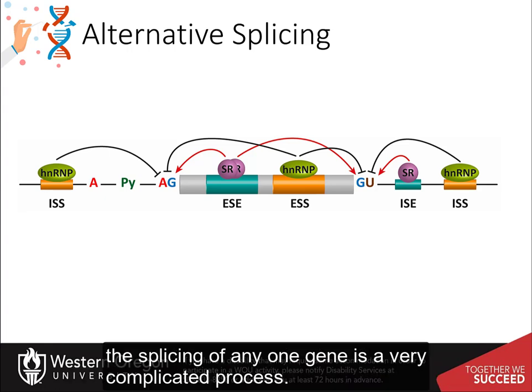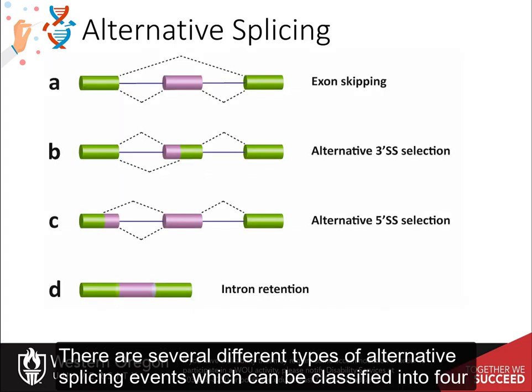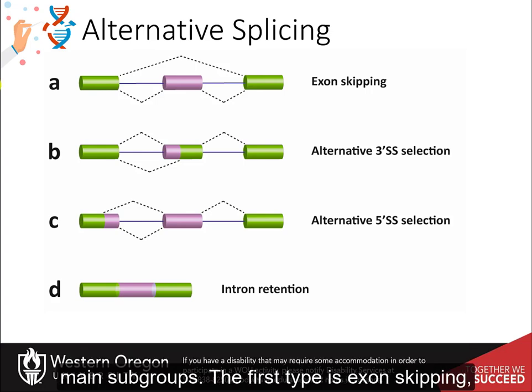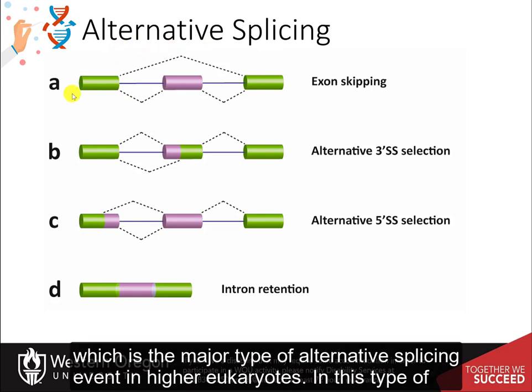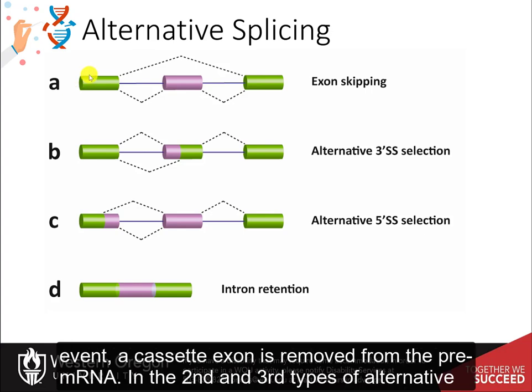The splicing of any one gene is a very complicated process. There are several different types of alternative splicing events which can be classified into four main subgroups. The first type is exon skipping, which is the major type of alternative splicing event in higher eukaryotes, in which a cassette exon is removed from the pre-messenger RNA.